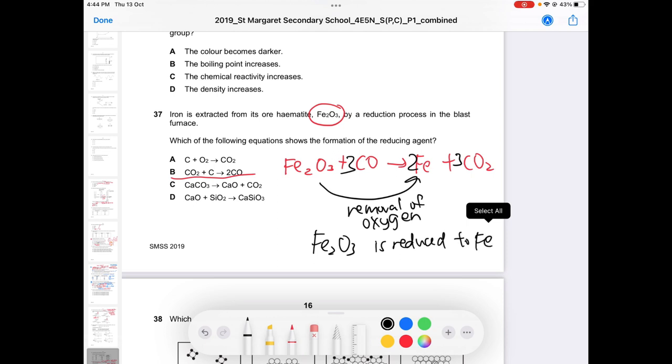The question is asking which of the following shows the formation of the reducing agent, which equation shows the formation of CO. You need to write down this equation for you to identify which one is the reducing agent. The reducing agent is my carbon monoxide, and this step shows the formation of carbon monoxide.